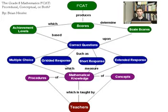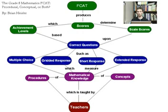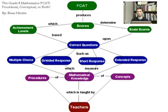The short response questions and the extended response questions are scored differently and are also harder. The short response questions are scored on a scale from zero to two, with zero being the lowest and two being the highest. These questions require more conceptual knowledge of mathematics and require that you do more work to find the correct answer. My research has shown that the majority of students will score either a zero or a one on these questions, and thus this needs to be improved.